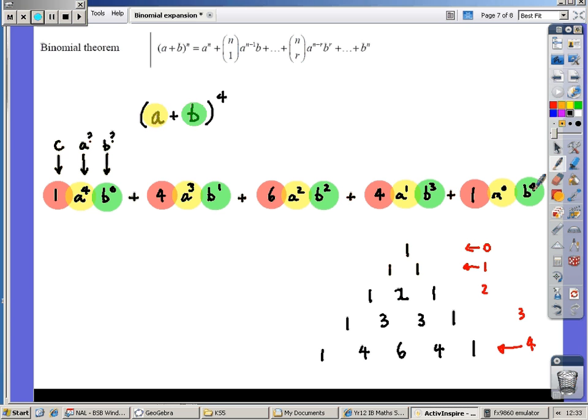So, the powers will always add to 4. A is counting down, B counting up. Symmetrical - it doesn't matter which way round I write it down. So, those three elements will help me make a binomial expansion for any particular expression.